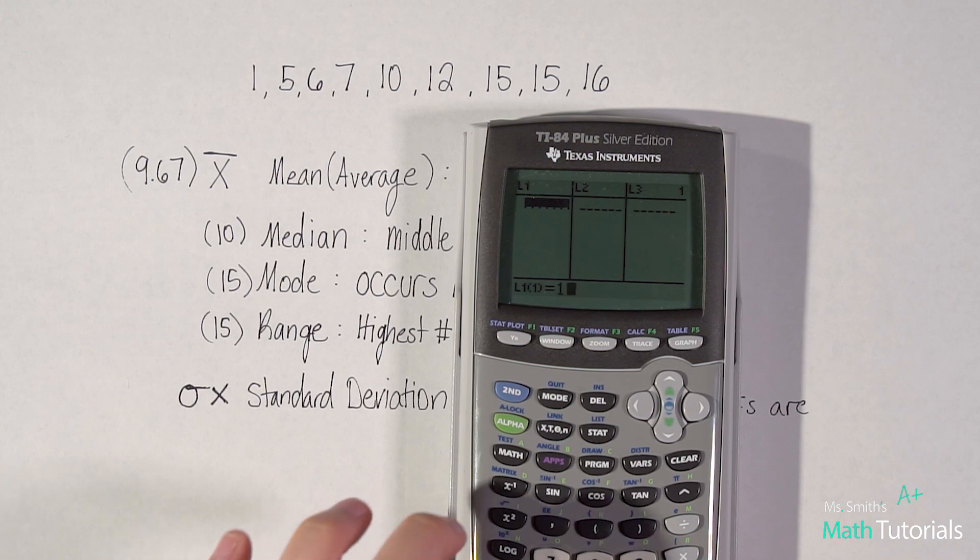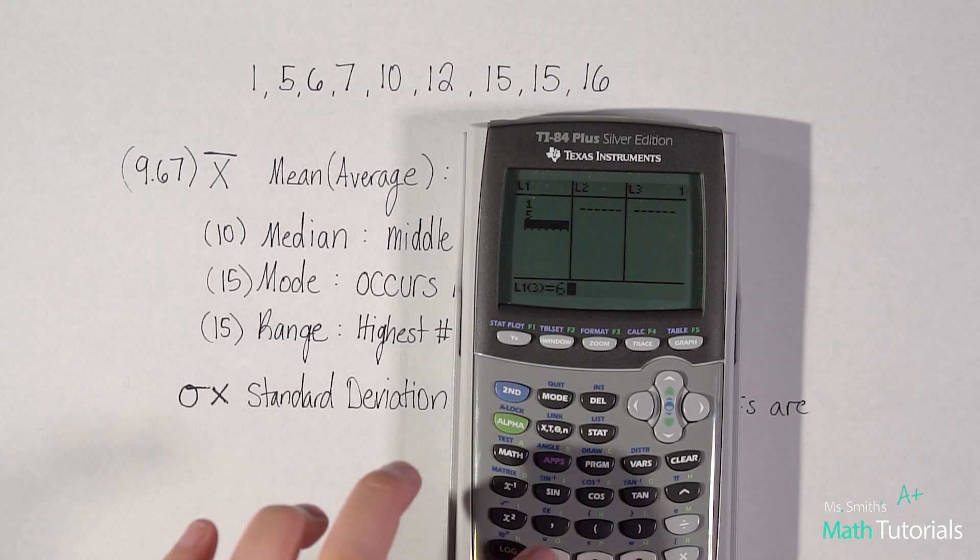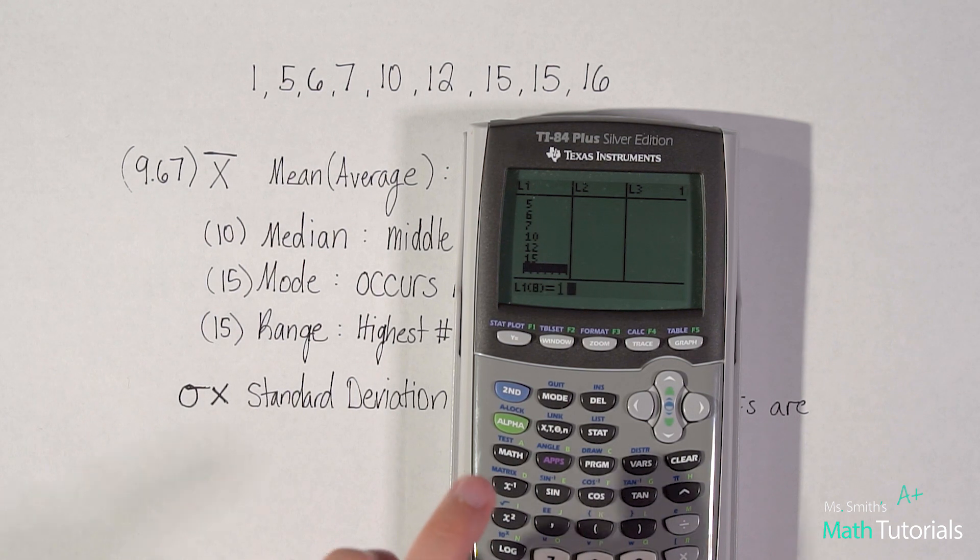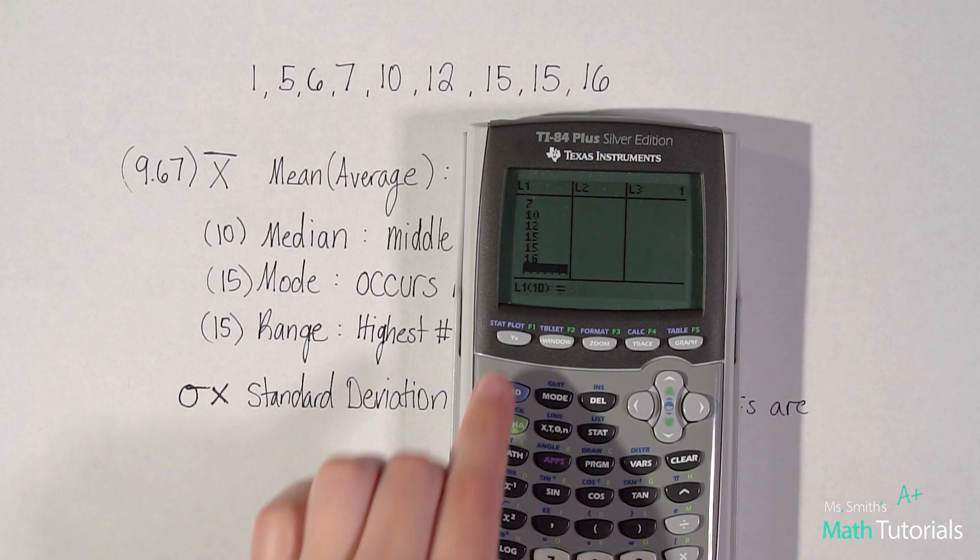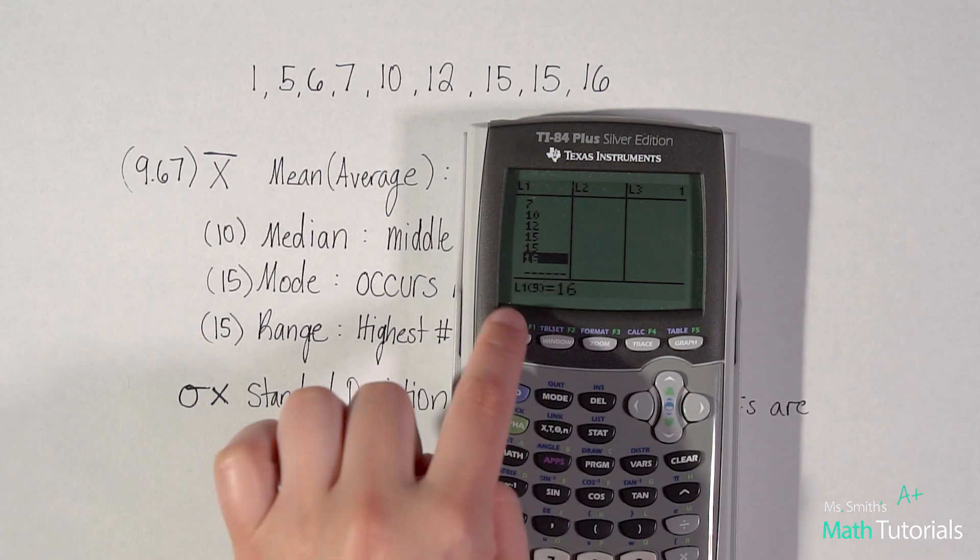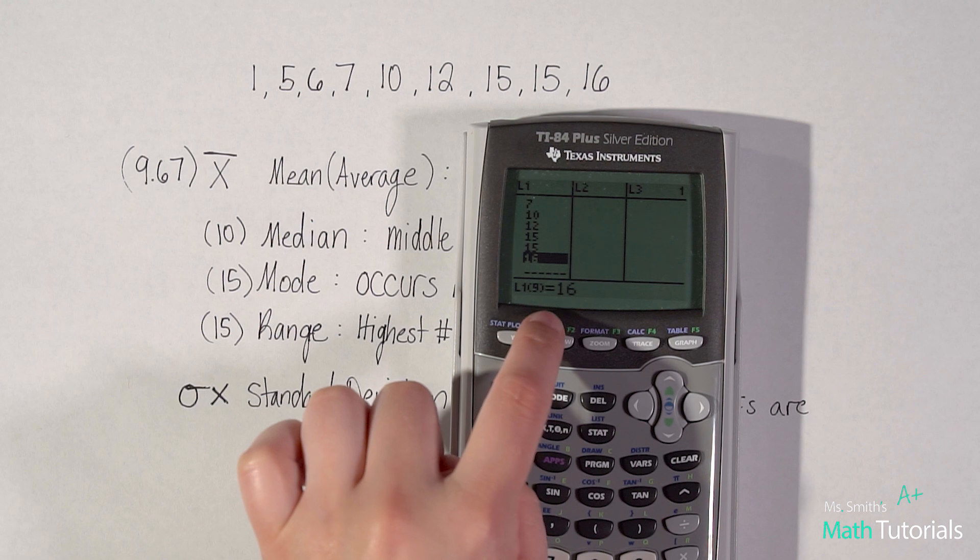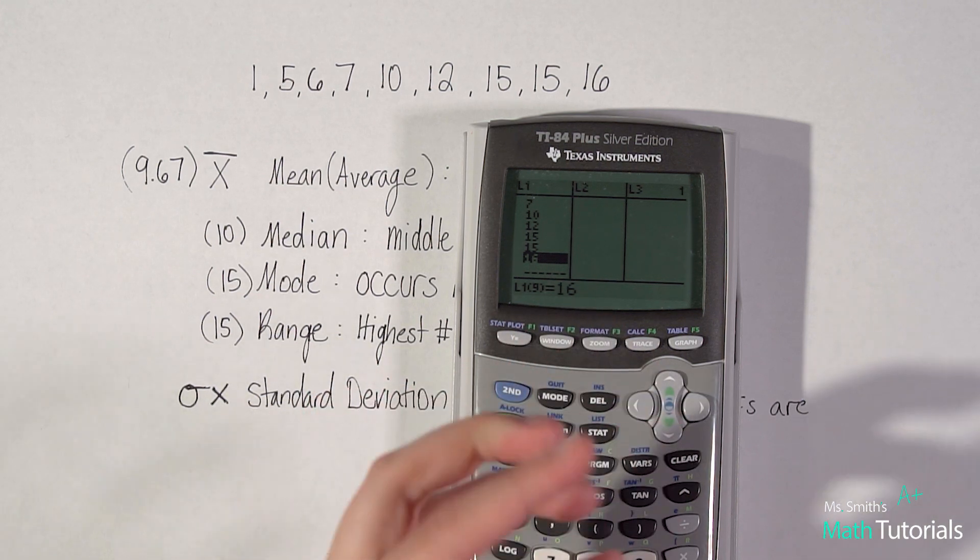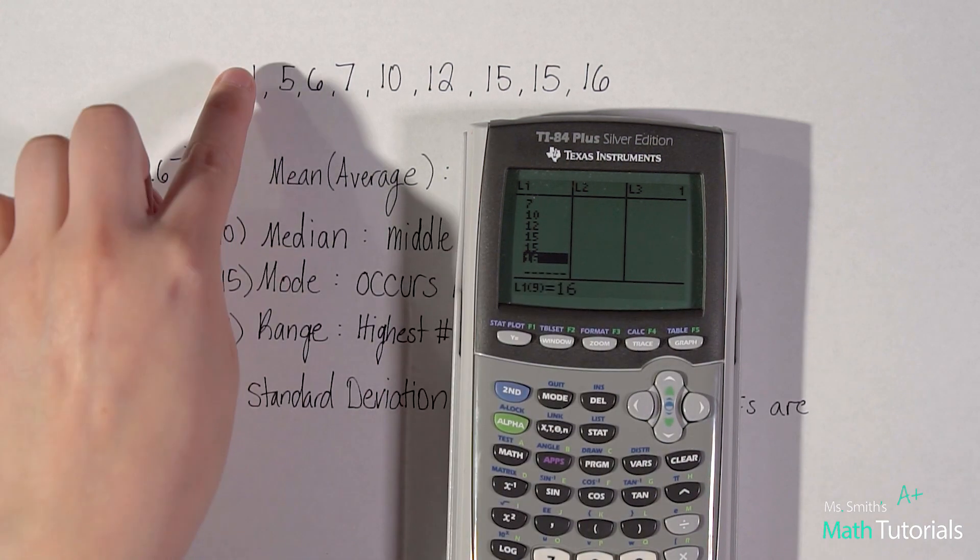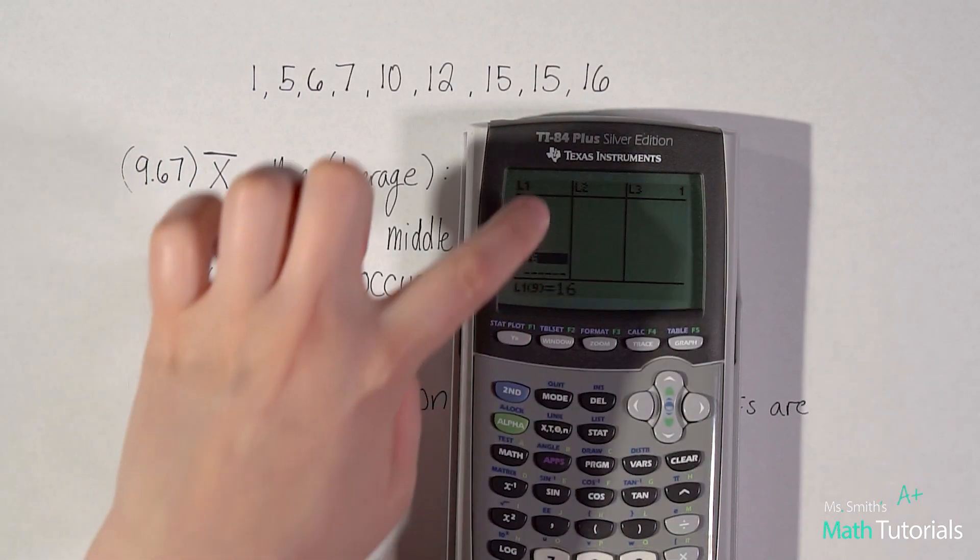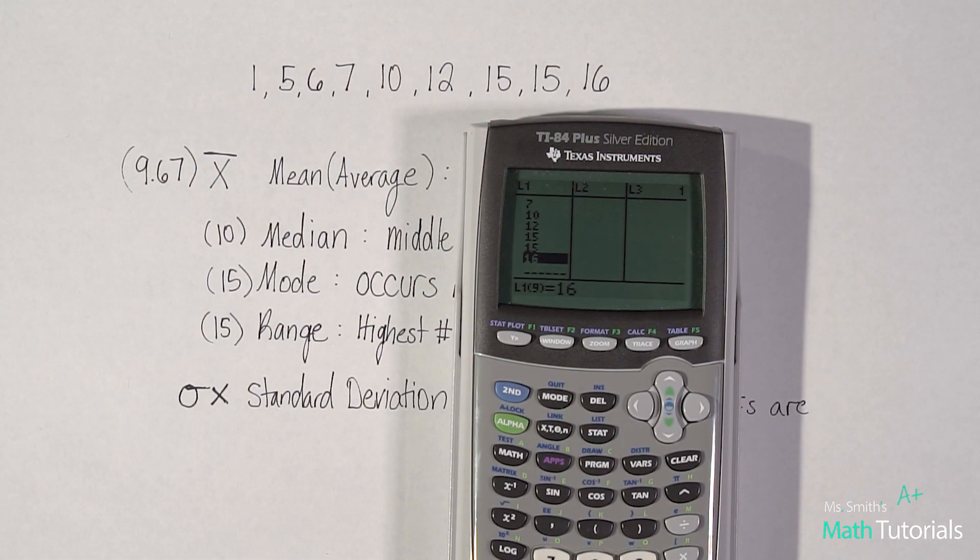One, five, six, seven, 10, 12, 15, 15, and 16. And this will tell you if you scroll up to the last value, it'll tell you how many values you have. So it says L1, nine, that means there are nine values. It's a good idea just to double check and say, okay, one, two, three, four, five, six, seven, eight, nine. Yes, I do have nine. It's very easy to make a mistake when you're inputting that data, especially when there's a lot of it.